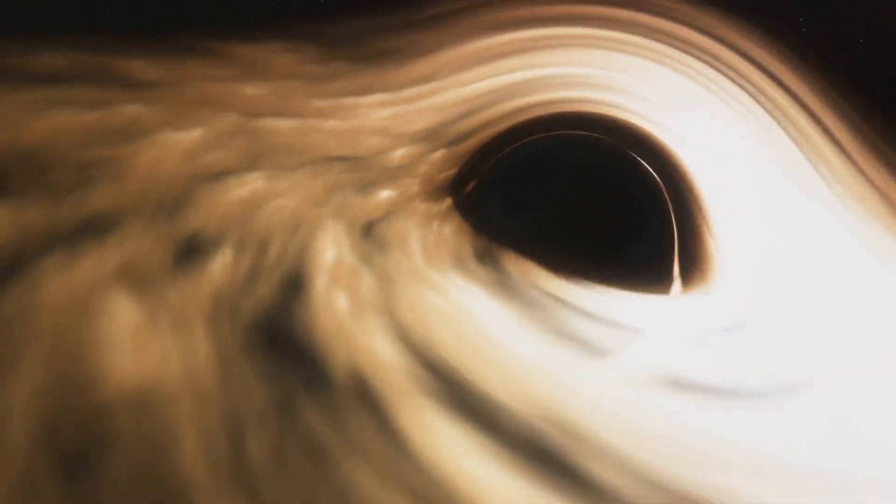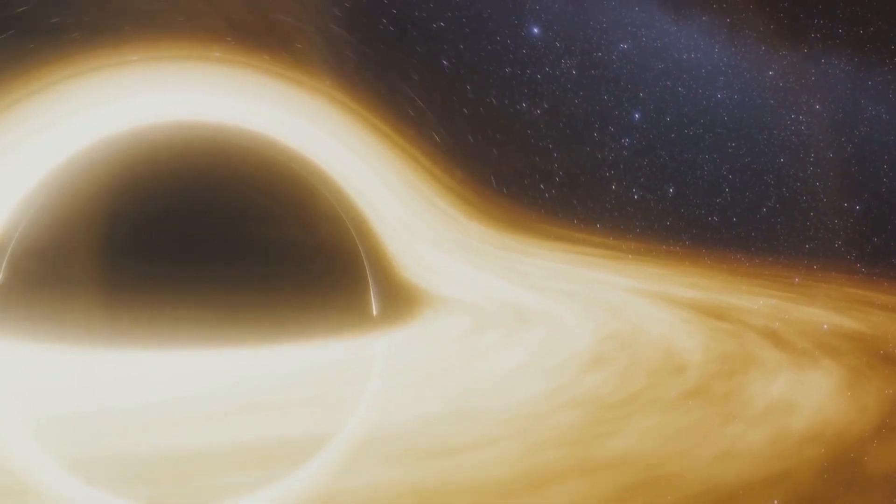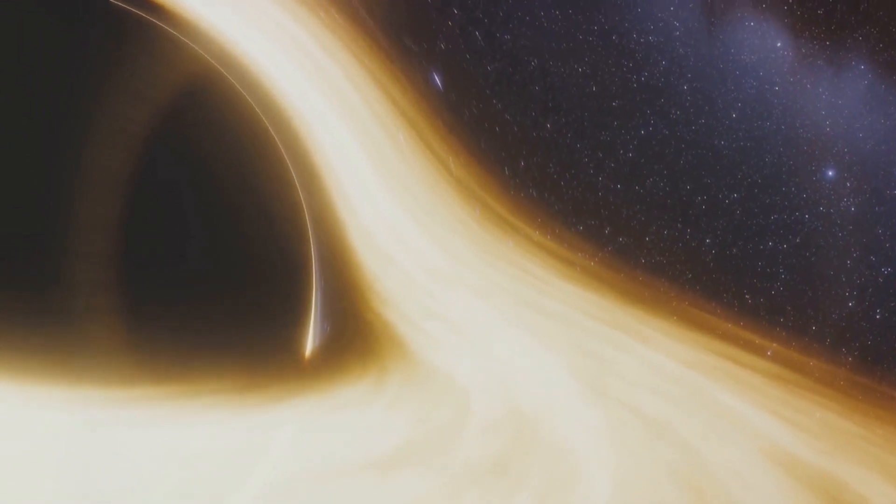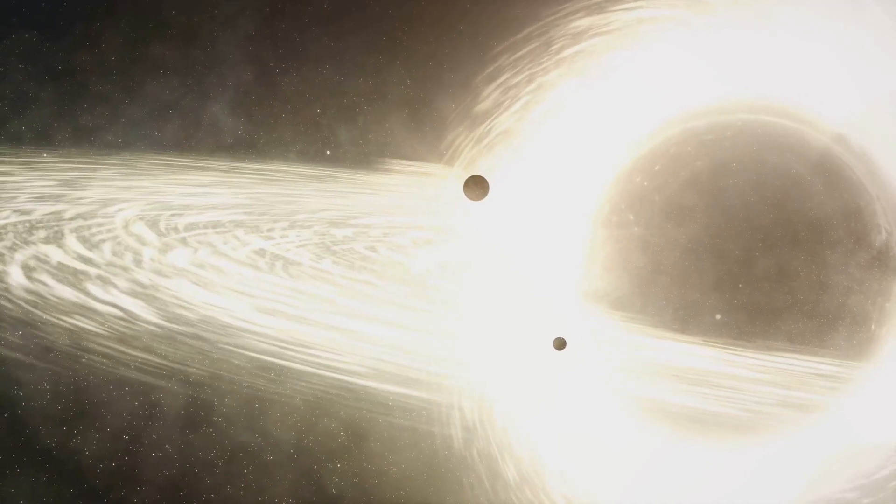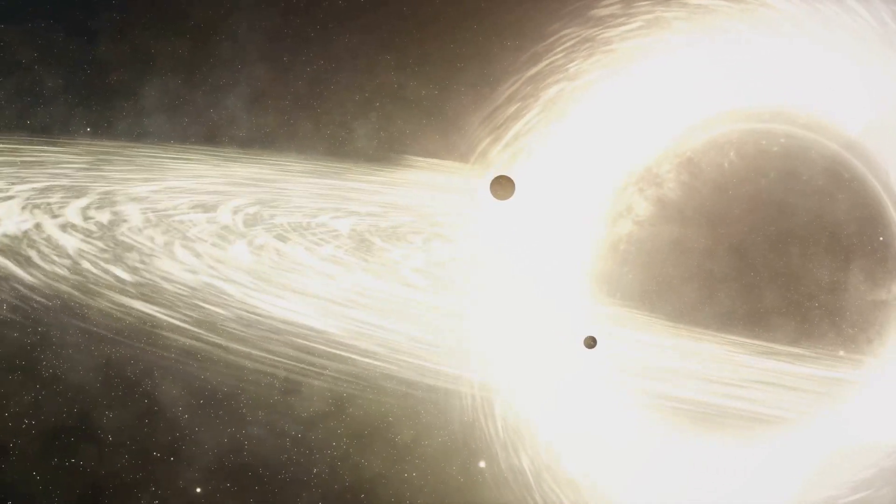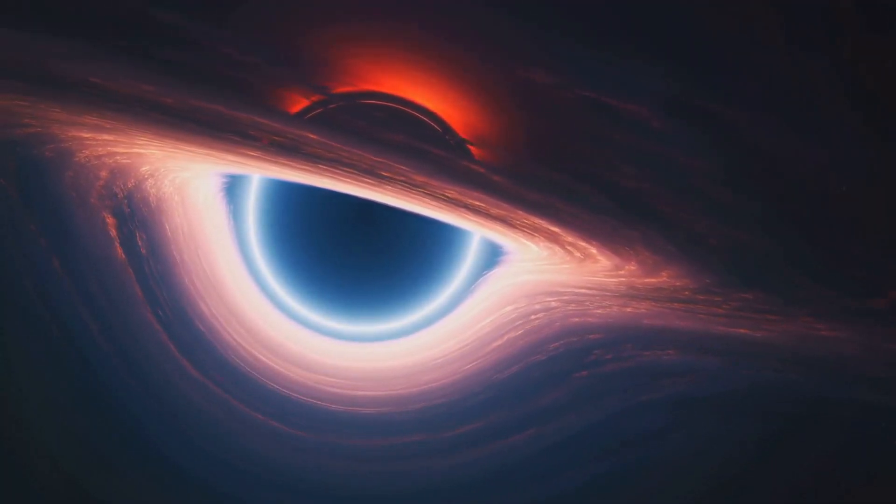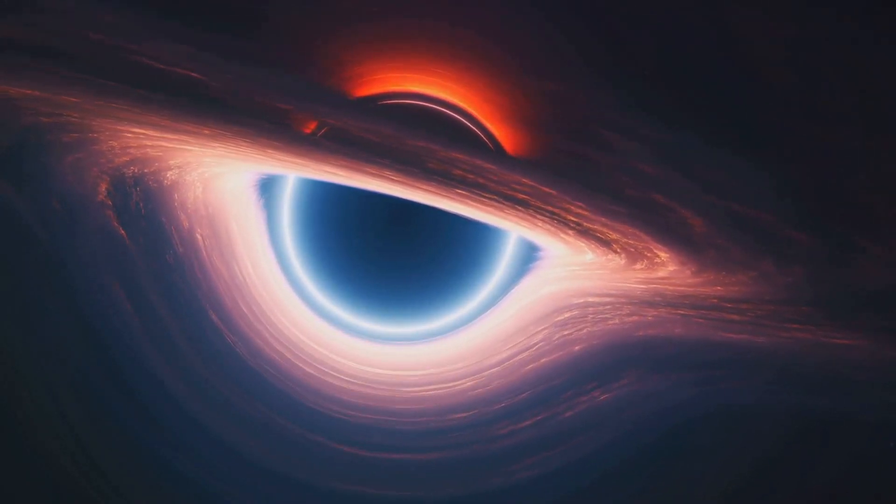The size and mass of TON 618 also gives it an incredibly powerful gravitational pull. This pull attracts matter into what we call an accretion disk, a swirling vortex of gas and dust that surrounds the black hole. As this material gets sucked in, it heats up and emits a tremendous amount of light. In fact, the light produced by TON 618's accretion disk is so bright that it outshines its host galaxy. And where is this behemoth located in the cosmos? TON 618 is situated about 10.4 billion light-years away from Earth. To put it another way, the light we see from TON 618 today actually started its journey when the Earth was just a toddler in cosmic terms, barely 2 billion years old.